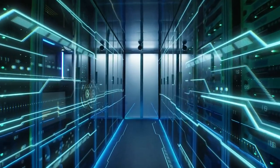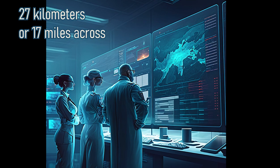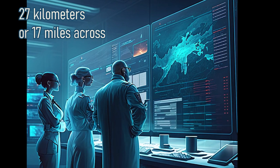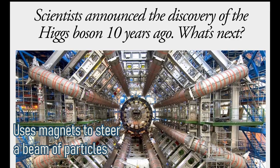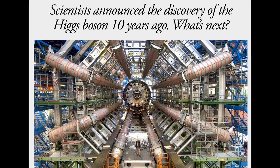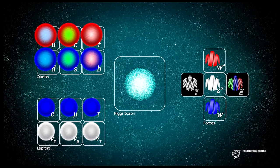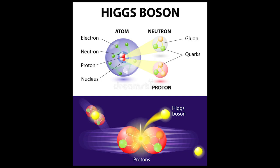The LHC is designed to accelerate protons and heavy ions to almost the speed of light and then collide them together, producing new particles that can be studied by physicists. The collisions take place in four main detectors: ATLAS, CMS, LHCb, and ALICE. The Large Hadron Collider is a circular tunnel that is 27 kilometers, about 17 miles, in circumference and located 100 meters, or 330 feet, underground. It uses powerful magnets to steer beams of particles around the ring and radiofrequency cavities to accelerate them. The Higgs boson was first observed by the ATLAS and CMS detectors at the Large Hadron Collider in 2012, and its discovery confirmed the existence of the Higgs field, a crucial piece of evidence supporting the standard model of particle physics.